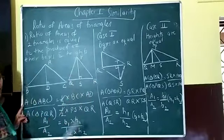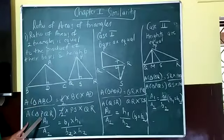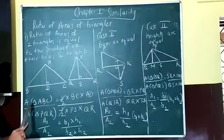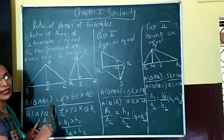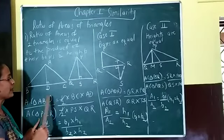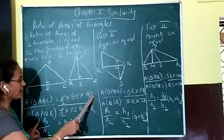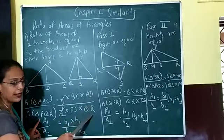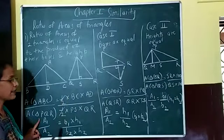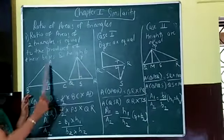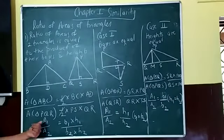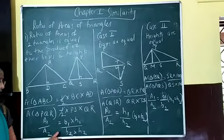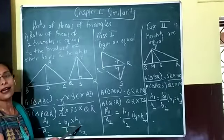According to this property, the ratio of areas of the two triangles — area of triangle ABC upon area of triangle BQR — uses the formula: area equals half times base times height. So area of triangle ABC is half times its base times its height, and triangle BQR is also half times its base times its height. The halves cancel, and finally, if A1 and A2 are the two areas, then A1 upon A2 equals B1 times H1 upon B2 times H2. The property states that the ratio of areas of two triangles equals the ratio of products of their bases and corresponding heights.